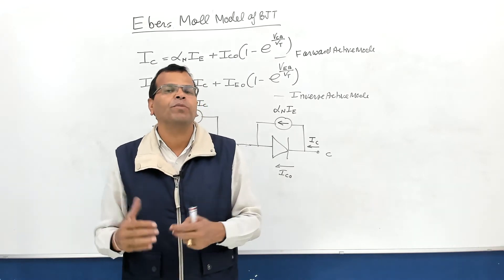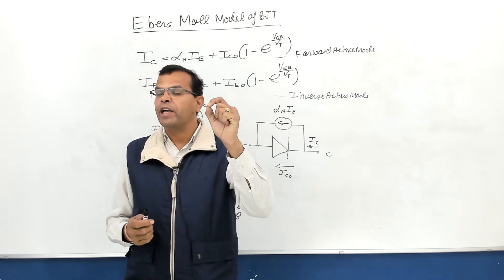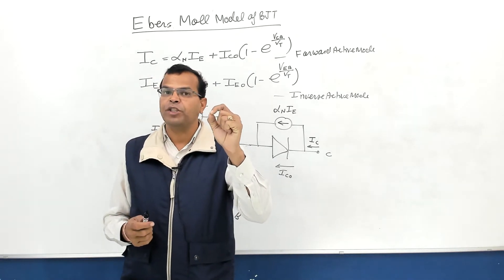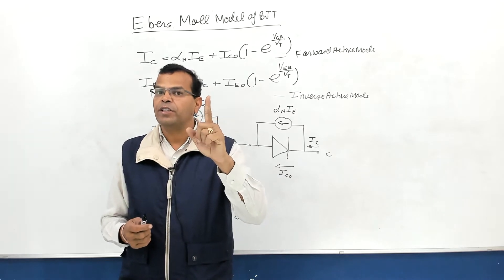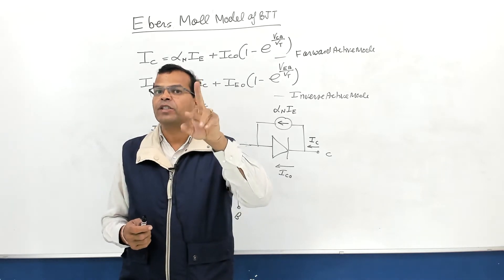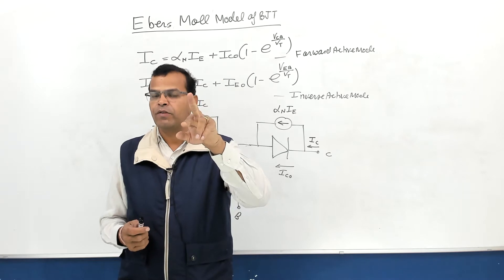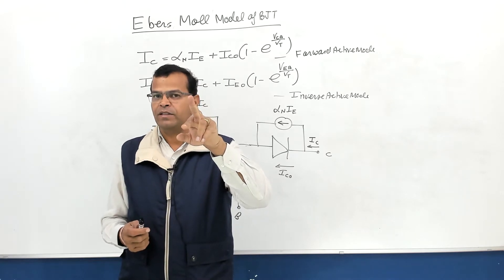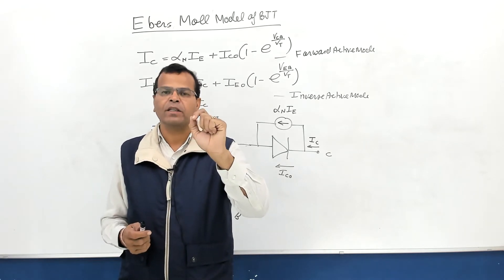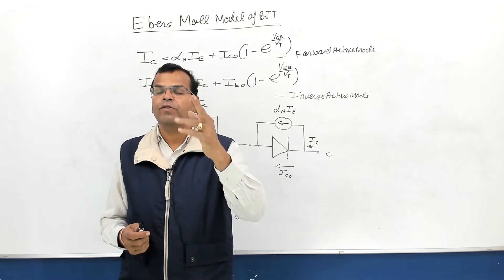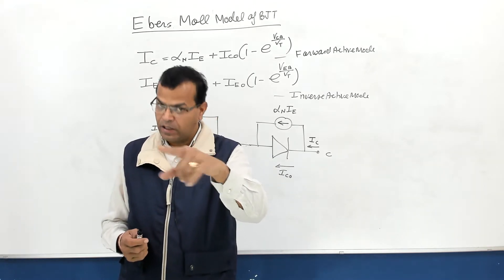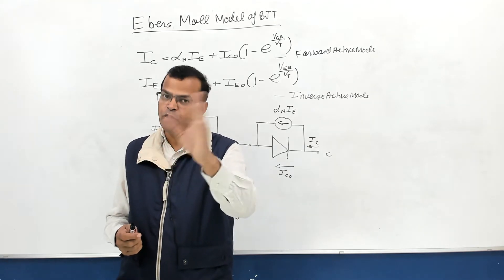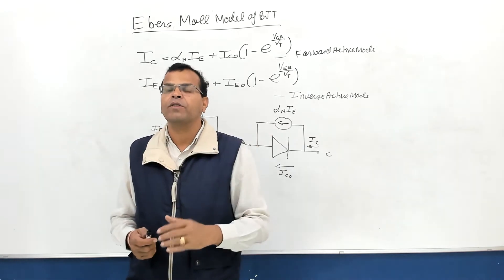If you remember the modes of operation: in forward active mode, the emitter junction is forward biased, the collector junction is reverse biased, and output is taken from the collector in general. In case of inverse mode of operation, the emitter junction is reverse biased, the collector junction is forward biased, and output is taken from the emitter.